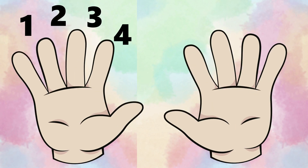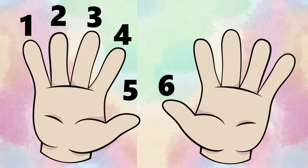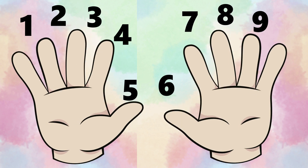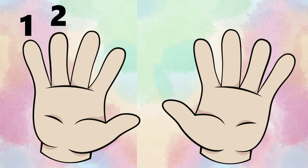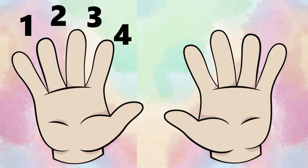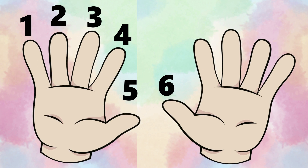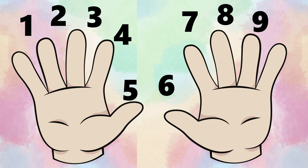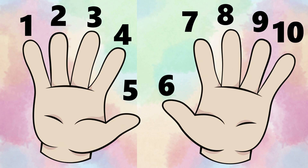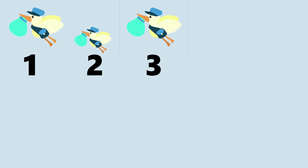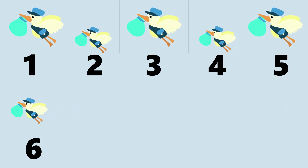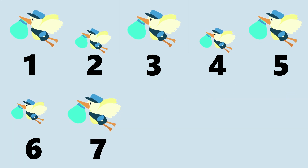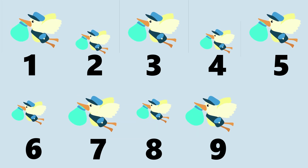...little fingers, 4 little, 5 little, 6 little fingers, 7 little, 8 little, 9 little fingers, 10 little fingers on my hand. 1 little, 2 little, 3 little fingers, 4 little, 5 little, 6 little fingers, 7 little, 8 little, 9 little fingers, 10 little fingers on my hand. 1, 2, 3, 4, 5, 6, 7, 8, 9, 10.